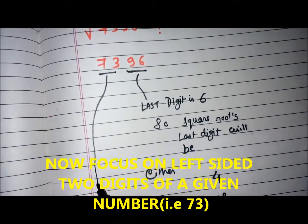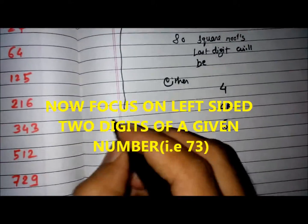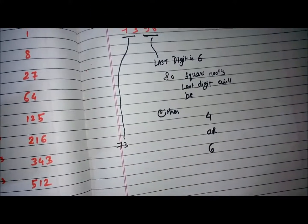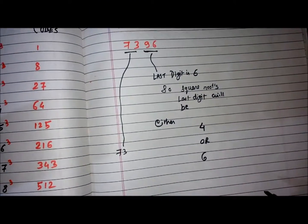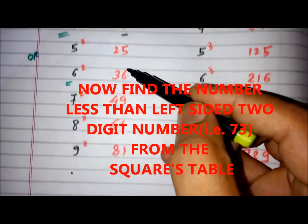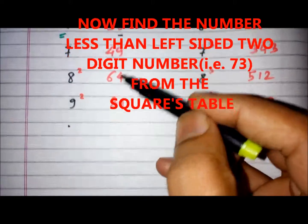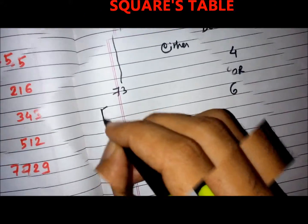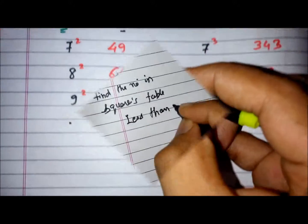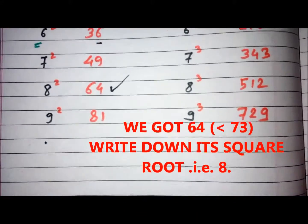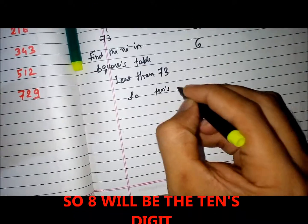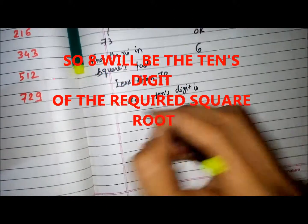Now focus on the left-sided two digits of the given number, that is 73. Find the number less than 73 from the squares table. We got 64, which is less than 73. Write down its square root, that is 8, so 8 will be the tens digit of the required square root.